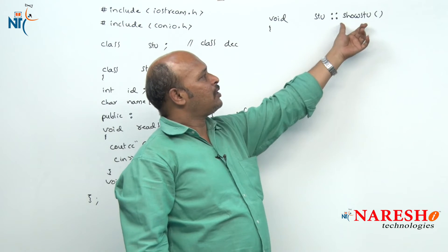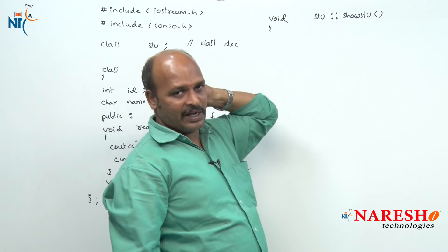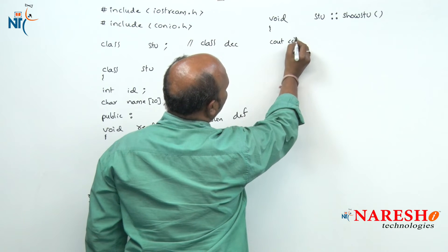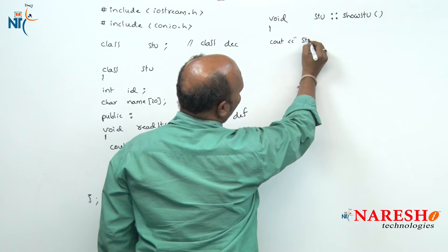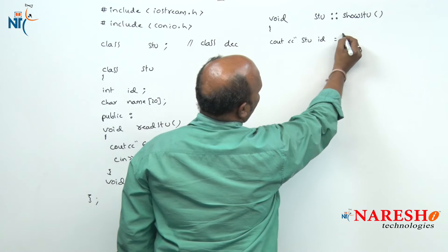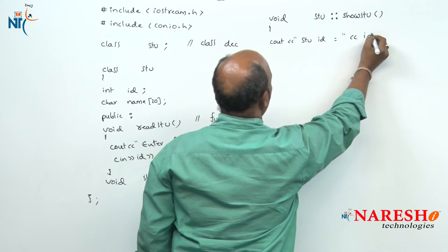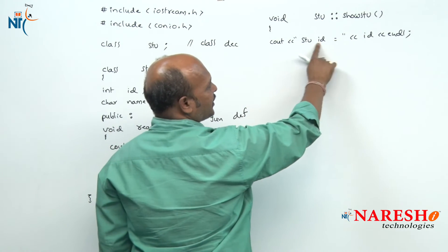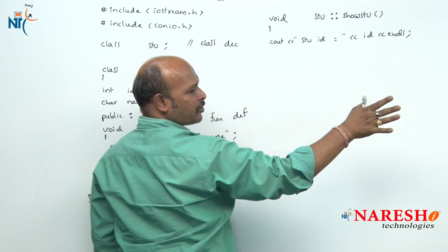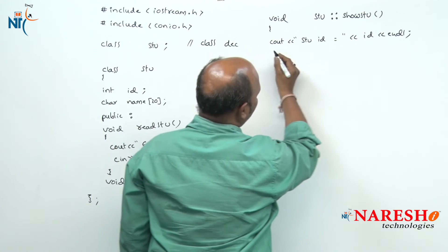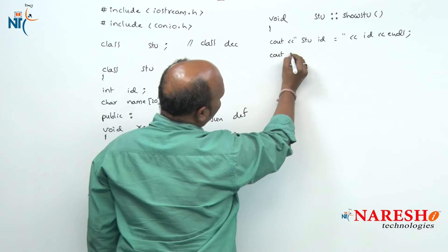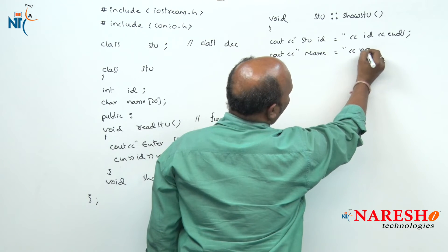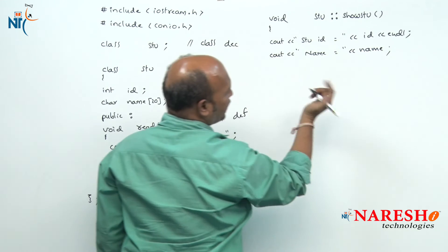This indicates that show_student is a member of the student class. Now here I am going to print the data: cout student id equal to, then id, then endl — endl gives a new line — so first the text is printed as-is, then the id number is printed.